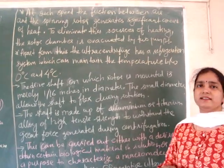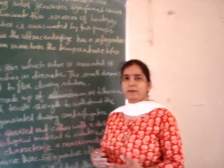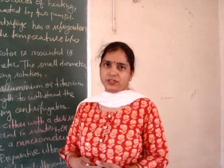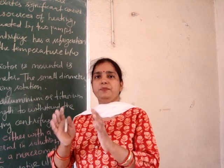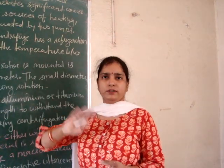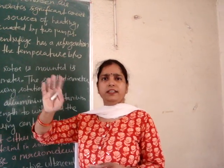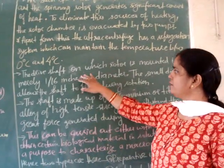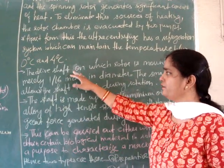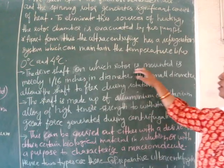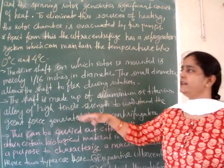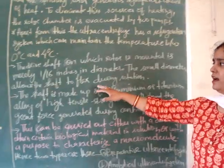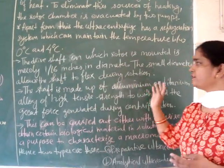Because many biological samples can denature or be damaged at high temperatures, it is very important when handling biological samples to maintain the temperature so it does not rise above 30 or 35 degrees Celsius. The shaft on which the rotor is mounted in the ultra centrifuge is nearly 1/16 of an inch in diameter, and this small diameter allows the shaft to flex during rotation.